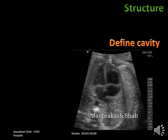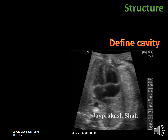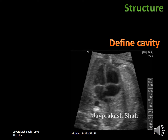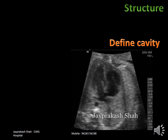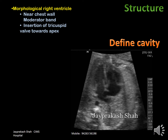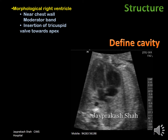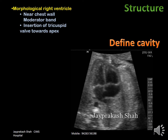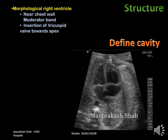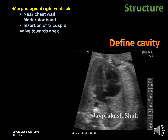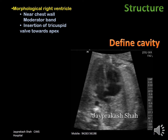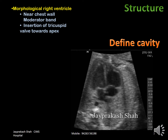Then define the structures and cavities — which is the right ventricle and which is the left ventricle, right atrium and left atrium. The cavity situated near the chest wall is the one with the moderator band. The cavity where the atrioventricular valve is towards the apex is the right ventricle. The cavity near the spine, where the flap of the foramen ovale is opening, where the pulmonary veins enter, and where the atrioventricular valve is towards the base, is the left atrium. The rest of the two cavities are automatically defined.